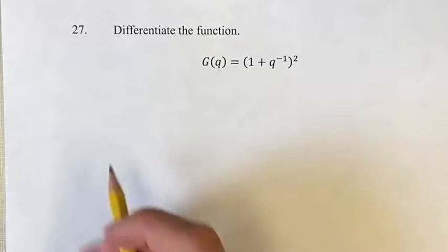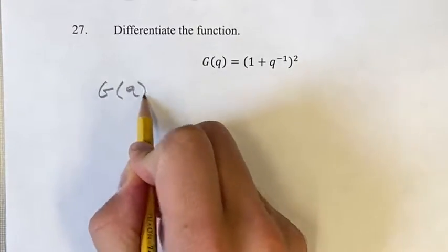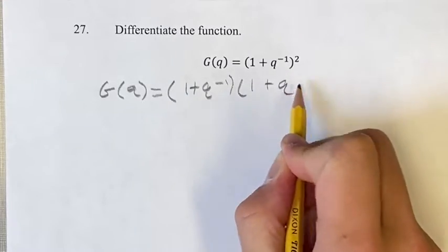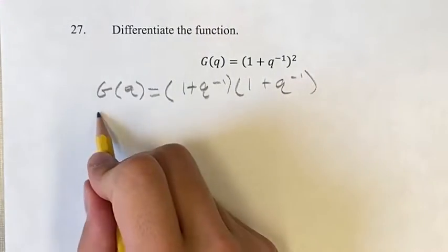The first thing we're going to do is distribute this out. So g of q, just writing it out, 1 plus q to the negative 1 squared, so it's times itself. So distributing this out,